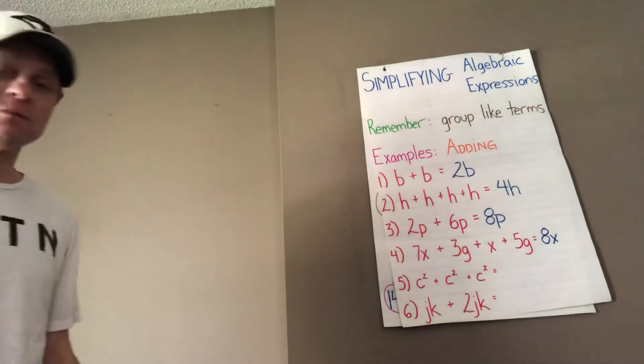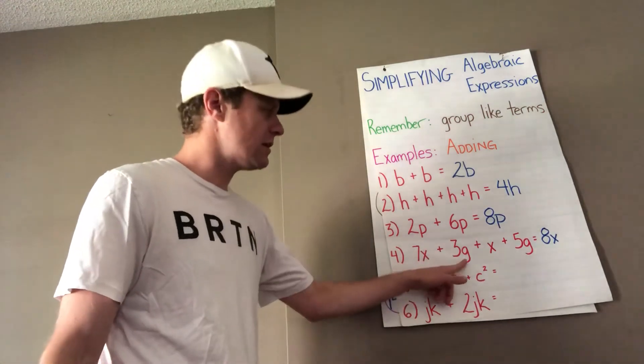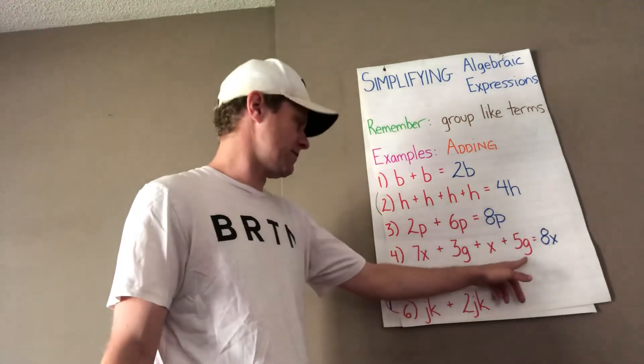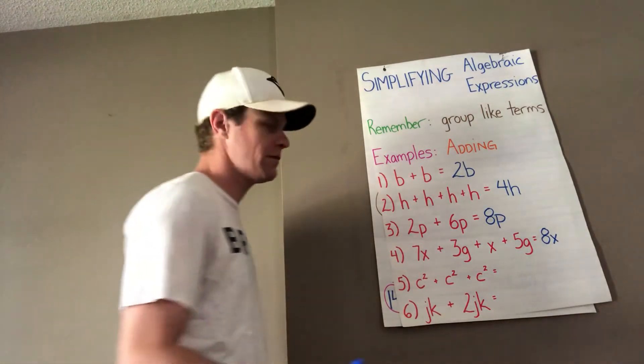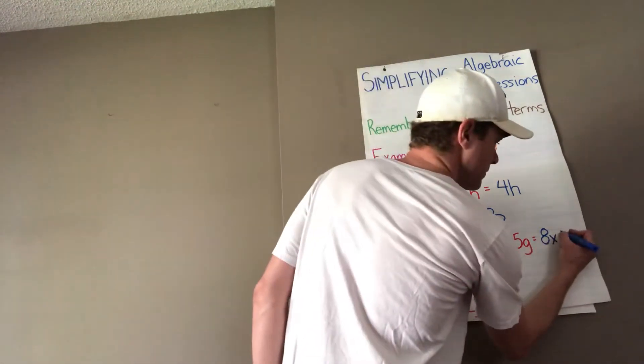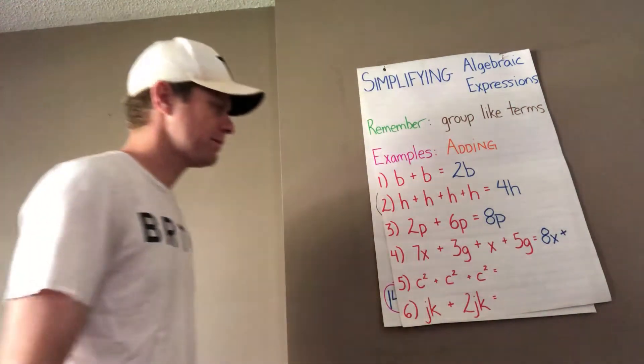8x. And then we still have the g's left. We have 3g plus 5g. So if you add 3g and 5g together, you get what? 8g.